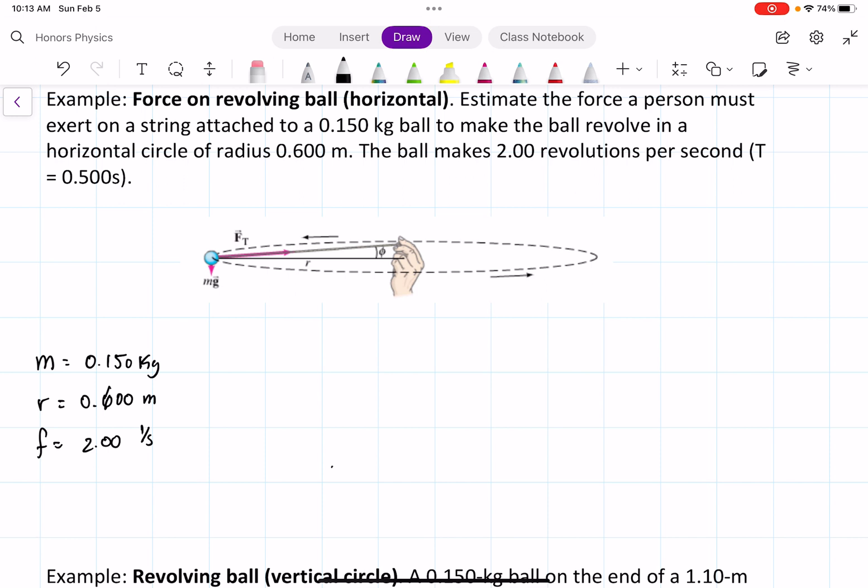If we draw out a free body diagram for this ball, we can see that we have the force of gravity downwards, which is mg, and we have the force of tension towards the middle of the circle.